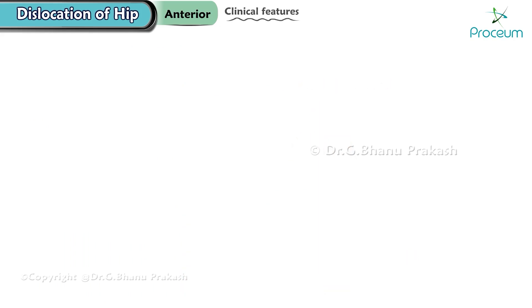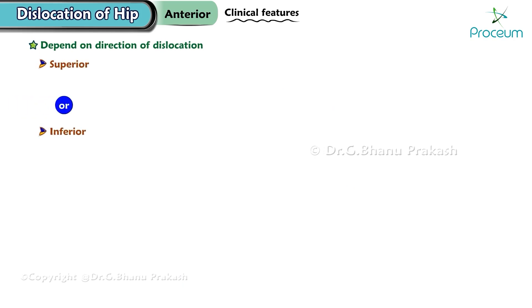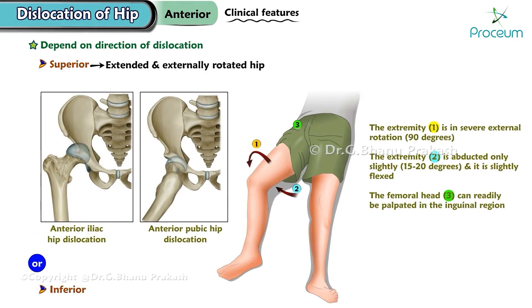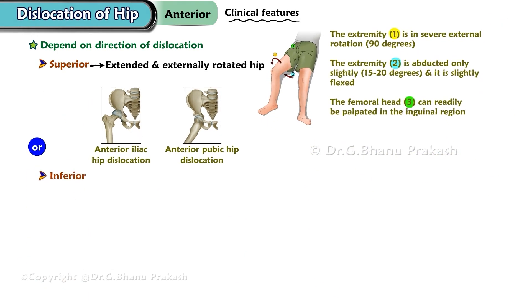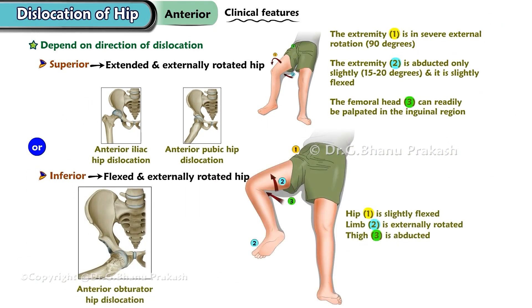Clinical features. The clinical features depend on the direction of the dislocation, which can be either superior or inferior. In superior dislocations, the hip is typically extended and externally rotated. On the other hand, inferior dislocations cause the hip to be flexed and externally rotated.